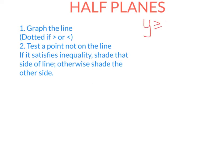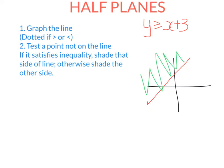So y is greater than or equal to x plus 3. Here, we're going to graph an inequality that has two variables. We'll end up graphing the line and then shading one side of the line like this. We call it a half-plane because we're sort of dividing the Cartesian plane in half — this half that satisfies the inequality and this half that doesn't.